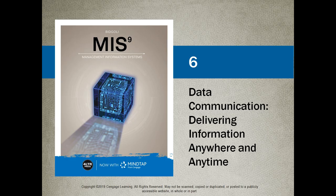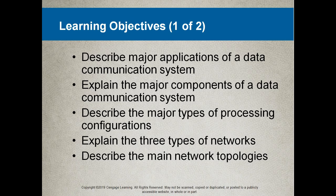We are taking a look at data communication: delivering information anywhere and anytime. Our learning objectives here are to describe the major applications of a data communication system, explain the major components of a data communication system, describe the major types of processing configurations, explain the three types of networks, and describe the main network topologies.